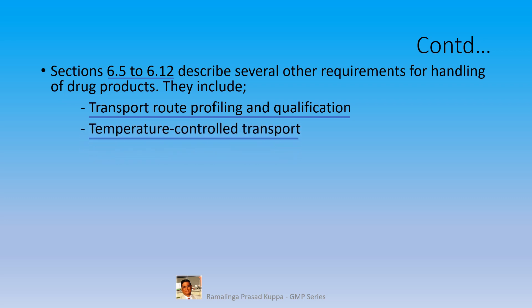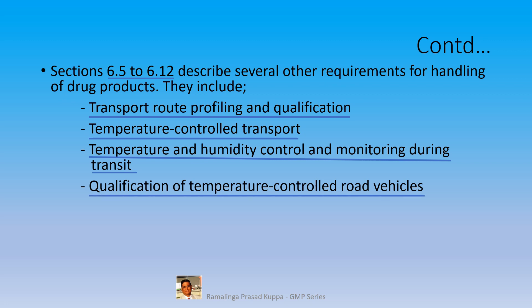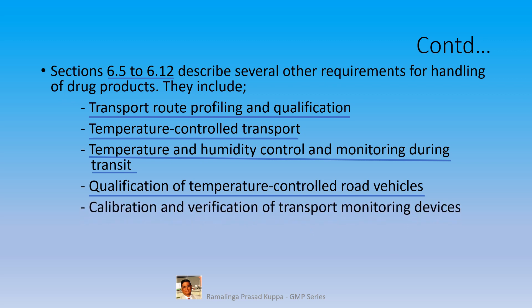Temperature controlled transport: the necessary hardware and software to achieve these conditions is required. Temperature and humidity controls and monitoring during transit — the software should be capable of monitoring the temperature and humidity at any required frequency throughout the transportation. Generally, it may be set at monitoring every half hour, sometimes less. Qualification of temperature controlled road vehicles is part of the hardware qualification for transportation. Calibration and verification of transport monitoring devices is part of the software qualification.